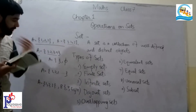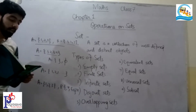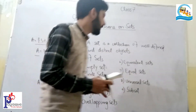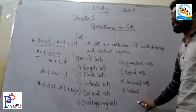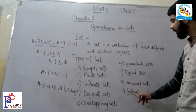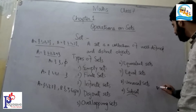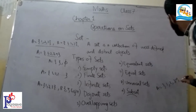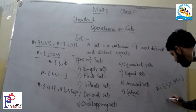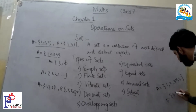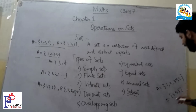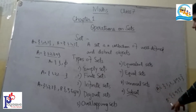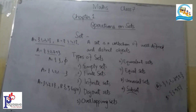Next is subset. A set within a set is called a subset. For example, A = {1, 2, 3, 4, 5} and B = {3, 4, 5}. B is a subset because A is the superset and B is contained within A.